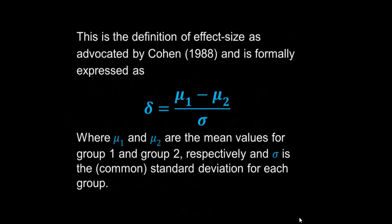Just to keep our geek friends happy, this can be formally written as delta equals mu 1 minus mu 2, the change in the sample means, divided by the common standard deviation for each group.